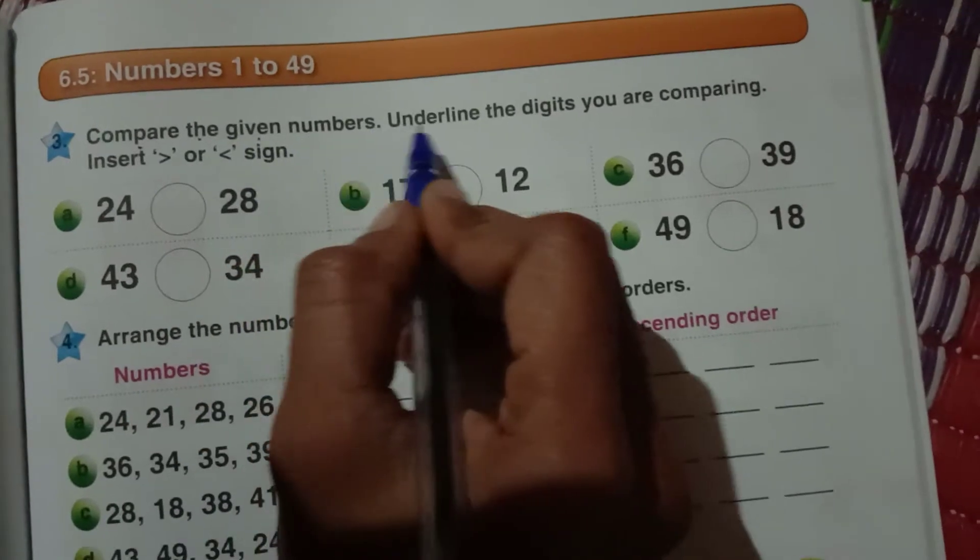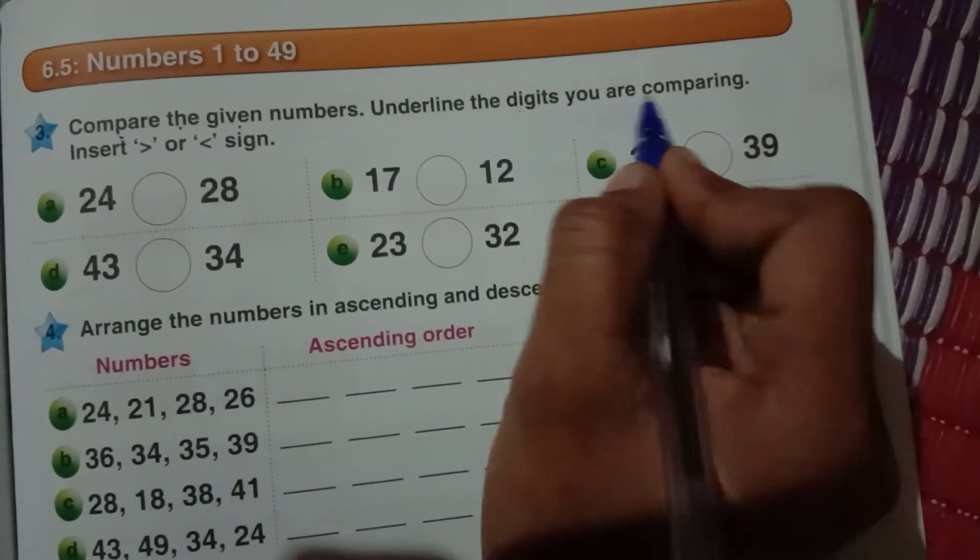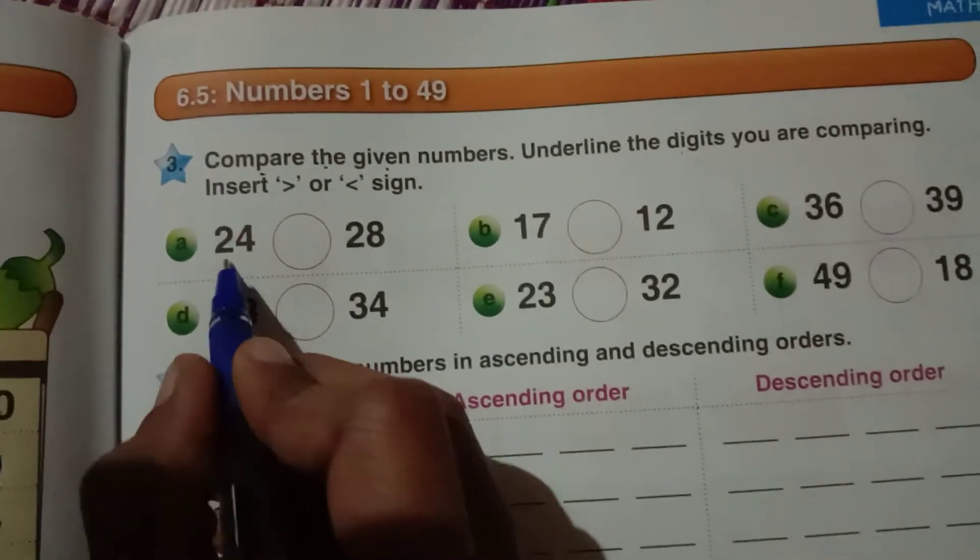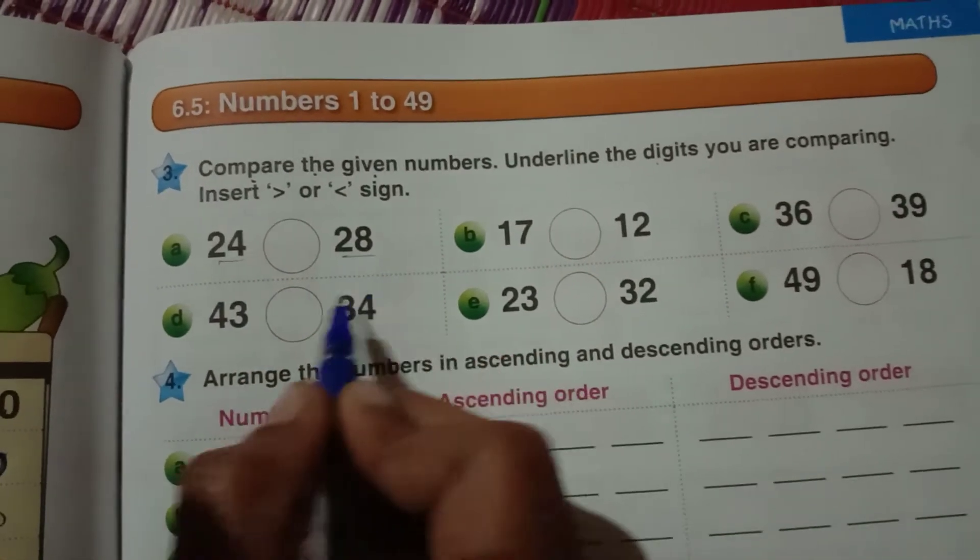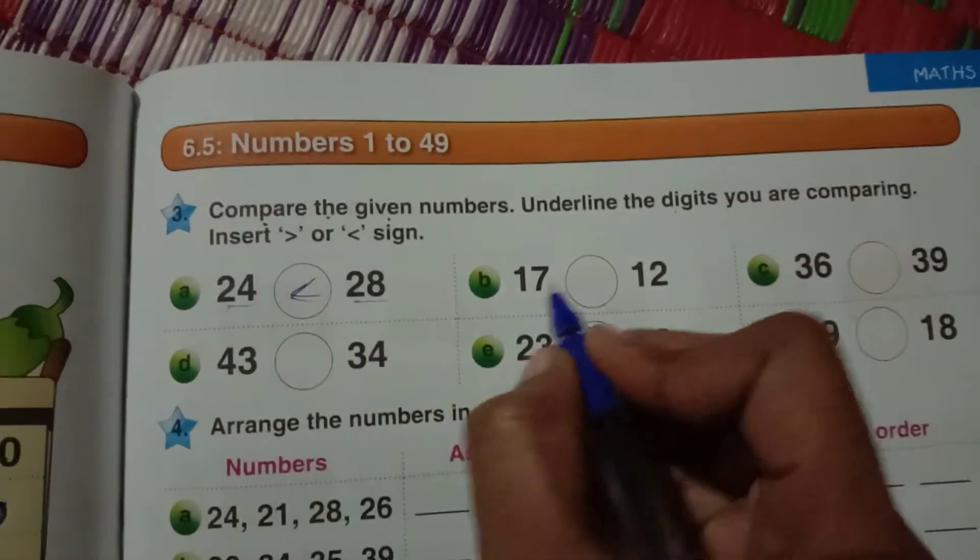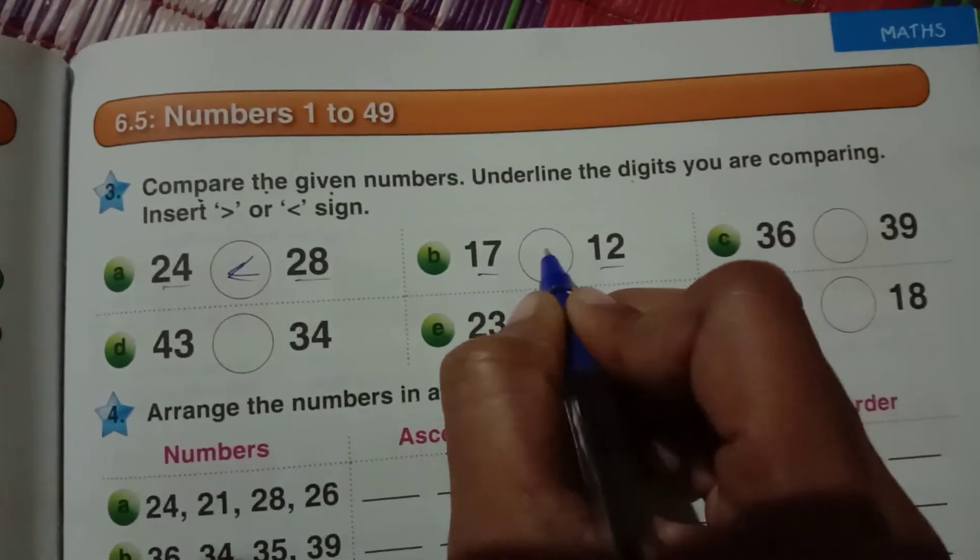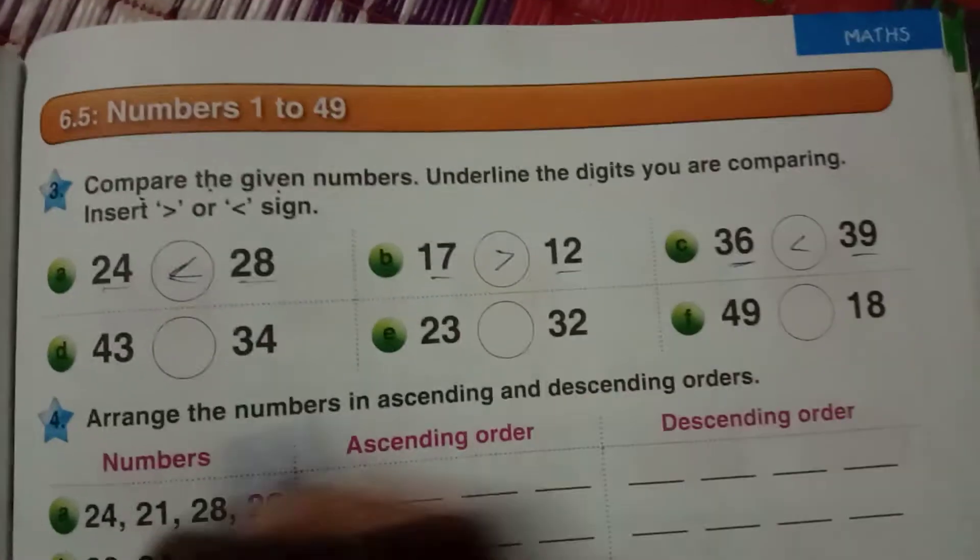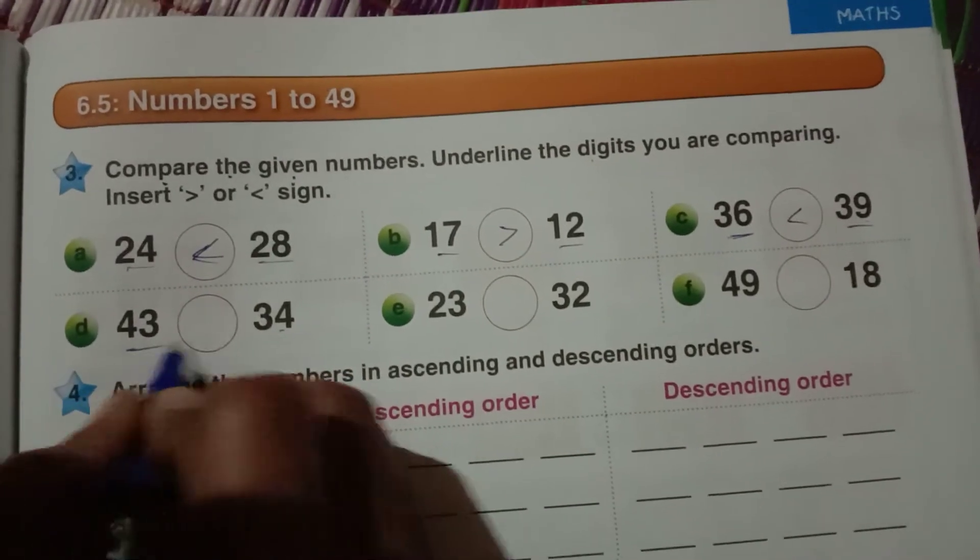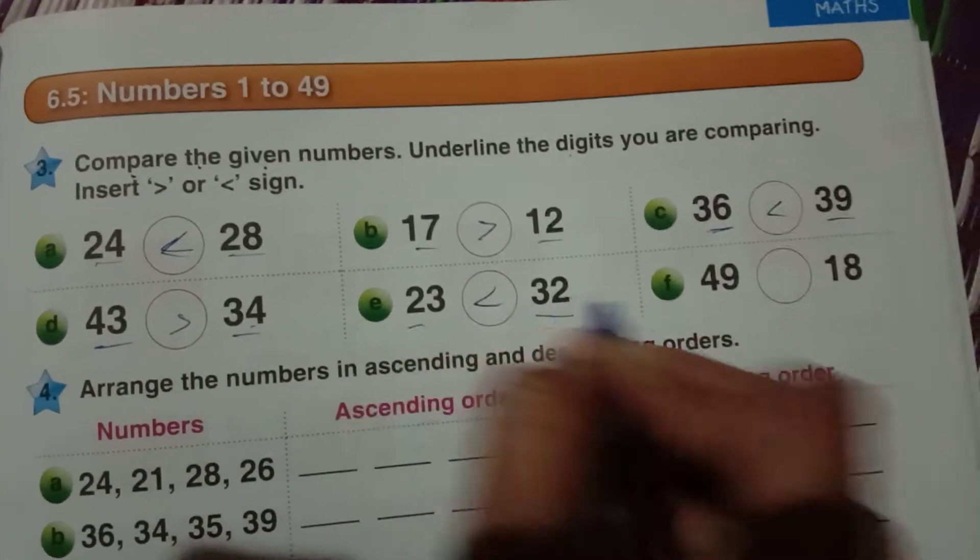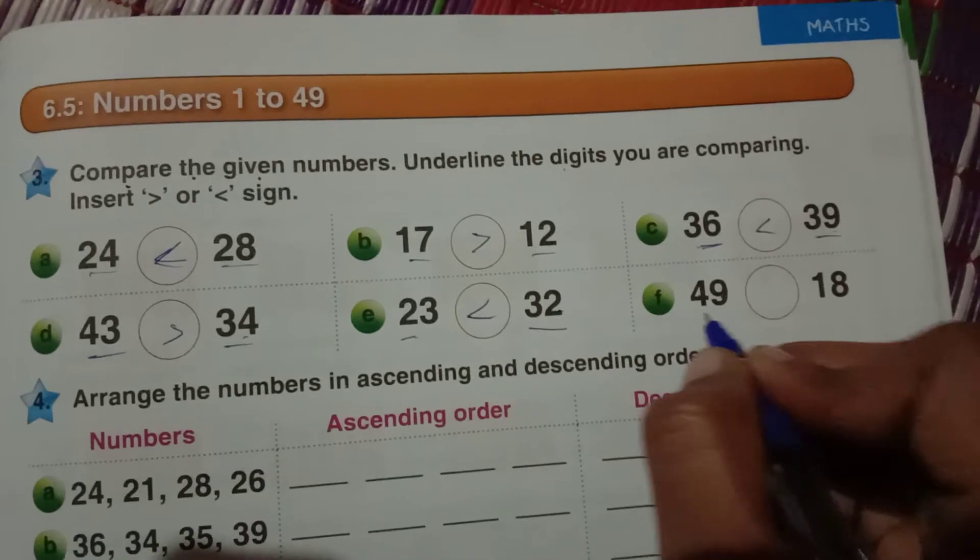Next, see here. Compare the given numbers. Underline the digits you are comparing, insert greater than or less than sign. Here 24 is there, here 28 is there. 24 is less than 28. 17, 12 - 17 is greater than 12. 36, 39 - 36 is less than 39. 43, 34 - 43 is greater than 34. 23, 32 - 23 is less than 32. 49, 18 - 49 is greater than 18.